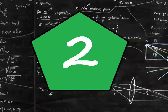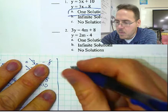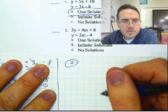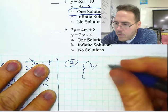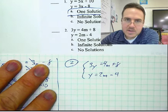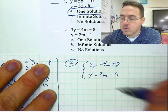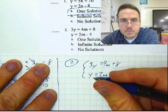Let's move to number 2. Number 2 says 3Y equals 4M plus 8, and Y equals 2M minus 4. These don't equal the same thing, so our system of equations is 3Y equals 4M plus 8 and Y equals 2M minus 4. We're going to engineer a way where they do equal the same thing. Look at this second row: Y equals 2M minus 4 — I could turn this into a 3Y by multiplying by 3.